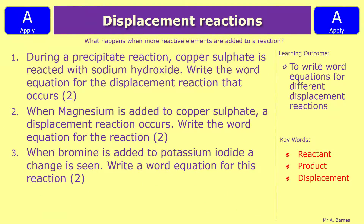We have three questions for displacement reactions. Question one: during a precipitation reaction, copper sulfate is reacted with sodium hydroxide — write the word equation. Question two: when magnesium is added to copper sulfate a displacement reaction occurs — write the word equation. Question three: when bromine is added to potassium iodide a change is seen — write a word equation for this reaction.